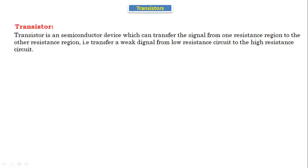Today we are going to discuss about transistors — what is a transistor, the introduction about the transistor, and PNP and NPN transistors. First of all, what is a transistor? Transistor is the combination of two words: 'trans' plus 'resistor.' A transistor is a semiconductor device which can transfer the signal from one resistance region to the other — that is, transfer a weak signal from a low resistance circuit to the high resistance circuit.